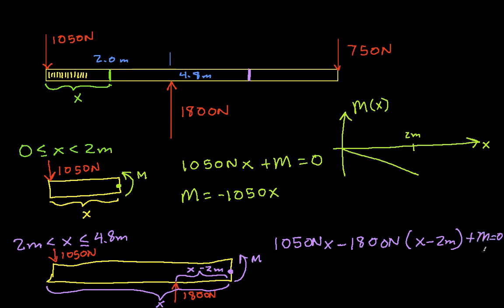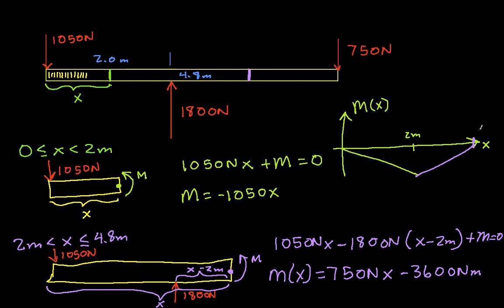We again sum the moments about this point to find M. We have 1050 newtons times X — positive because it's making a counterclockwise rotation — minus 1800 newtons times (X minus 2 meters), which is negative because it's making a clockwise rotation, plus M is equal to zero. Solving this, M of X equals 750 newtons times X minus 3600 newton meters. Graphing this, it goes from our point back up to zero at 4.8 meters, with a slope of 750 newtons per meter, whereas the slope in the first region was minus 1050 newtons per meter.